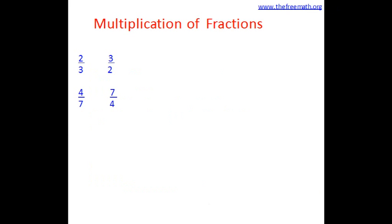Now let's look at something more about fractions. Let's look at these two pairs: the first pair is 2 over 3 and 3 over 2; the second is 4 over 7 and 7 over 4. We observe that the numerator of the first fraction is the denominator of the second, and the denominator of the first is the numerator of the second — we have interchanged the numerator and denominator. This kind of fraction is called the reciprocal or multiplicative inverse of the first fraction.